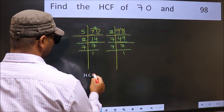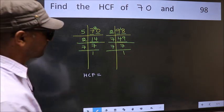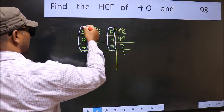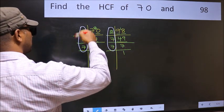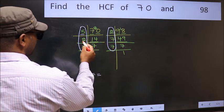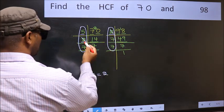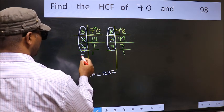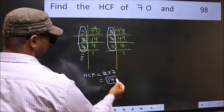Therefore, our HCF is the product of the numbers which are present in both factorizations — that is, here and also here. We check each factor: 5 is not present in 98's factorization, so no. 2 is present in both, so we cut 2. Next, 7 is present in both, so we cut 7. No more common numbers remain. So our HCF is 2 times 7, which equals 14.